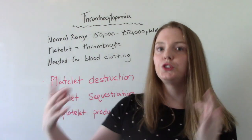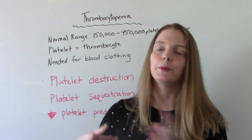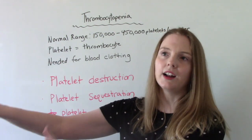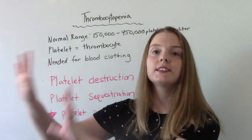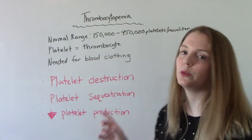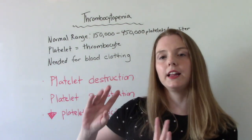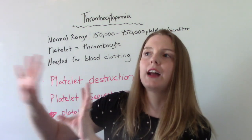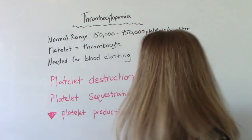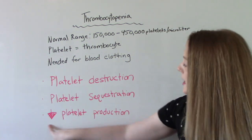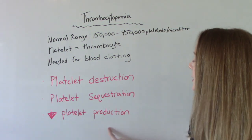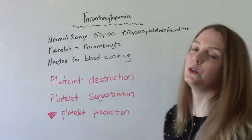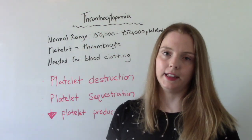So if you're in a jury and you're being sequestered, you're being kind of put in another space that's separate. In this situation, the platelets are being held somewhere where they're not able to be used. Or decreased platelet production — you're not making a healthy normal amount of platelets.